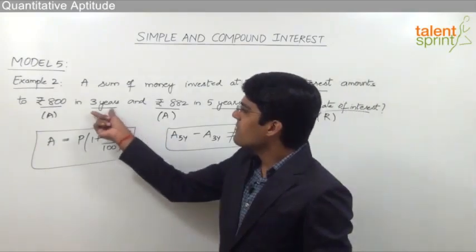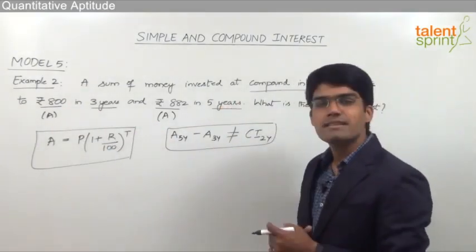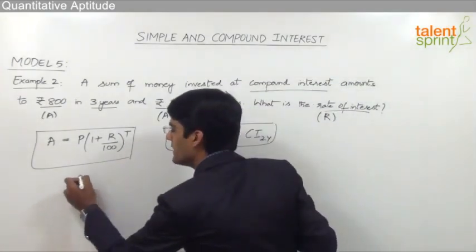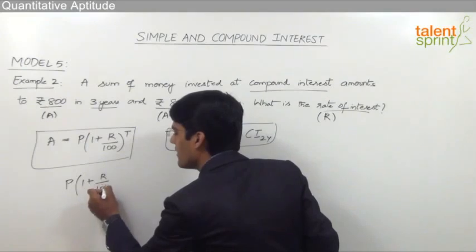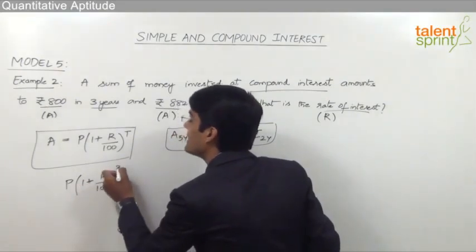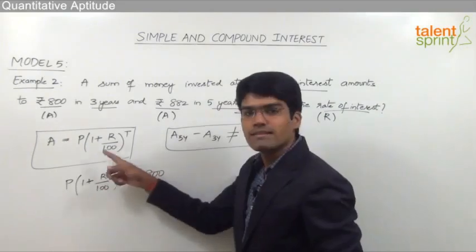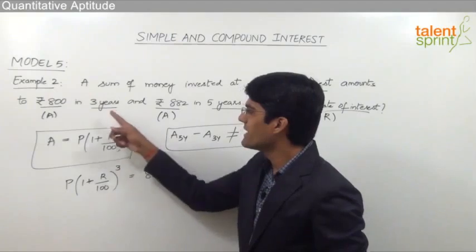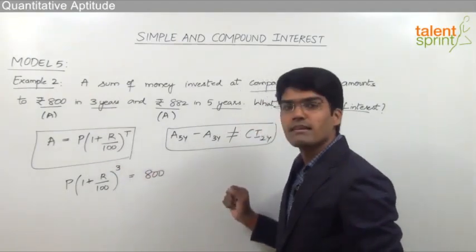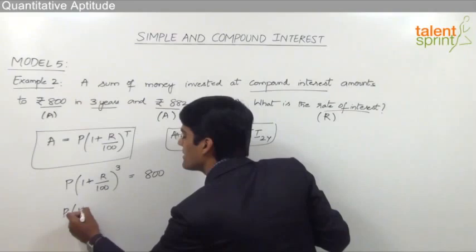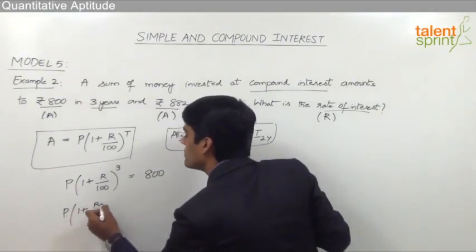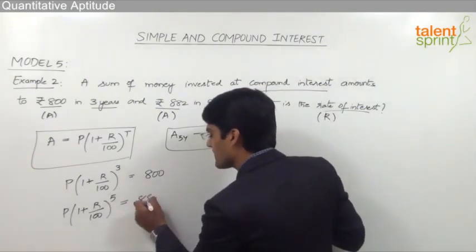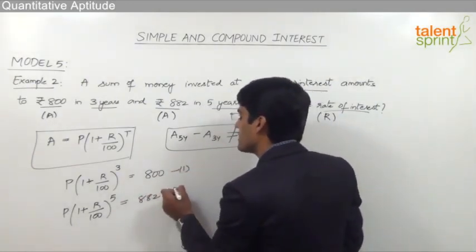As given in the question, amount for 3 years is 800 and amount for 5 years is 882. Going by the formula, principle into (1 plus r by 100) whole to the power of 3 equals 800 — that is the formula for amount: P into (1 plus r by 100) whole power t. Similarly, principle into (1 plus r by 100) whole to the power of 5 equals 882. These are equation number 1 and equation number 2.